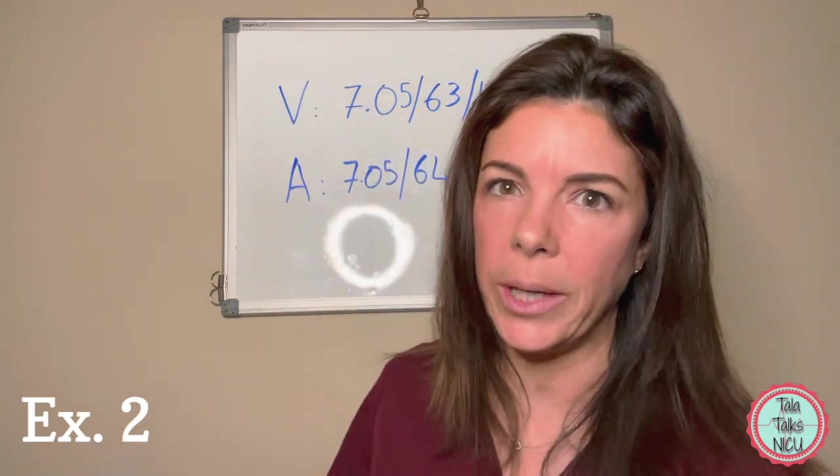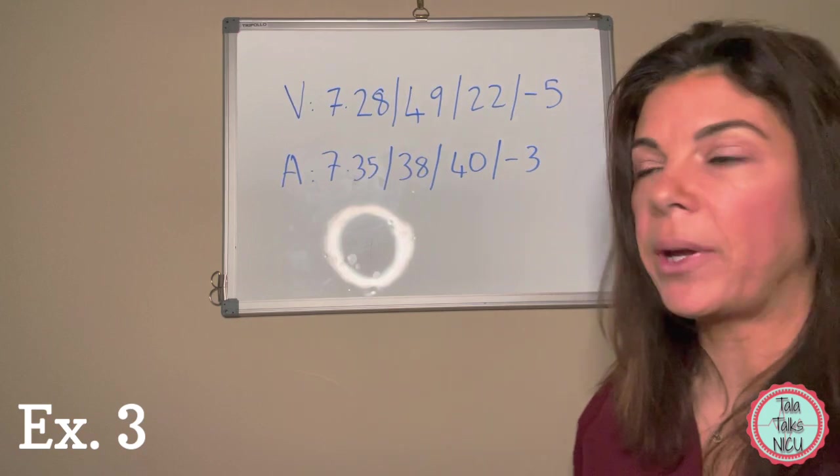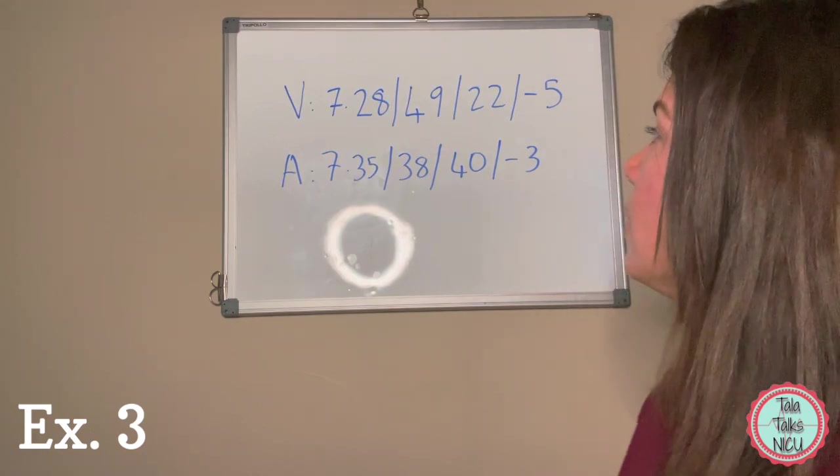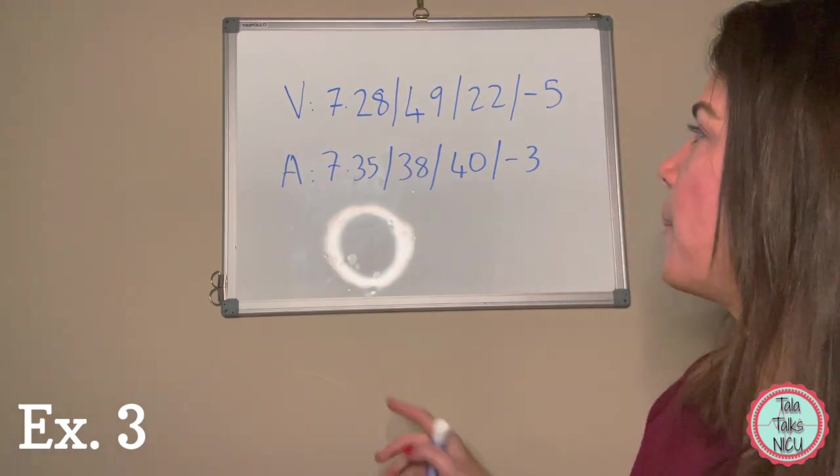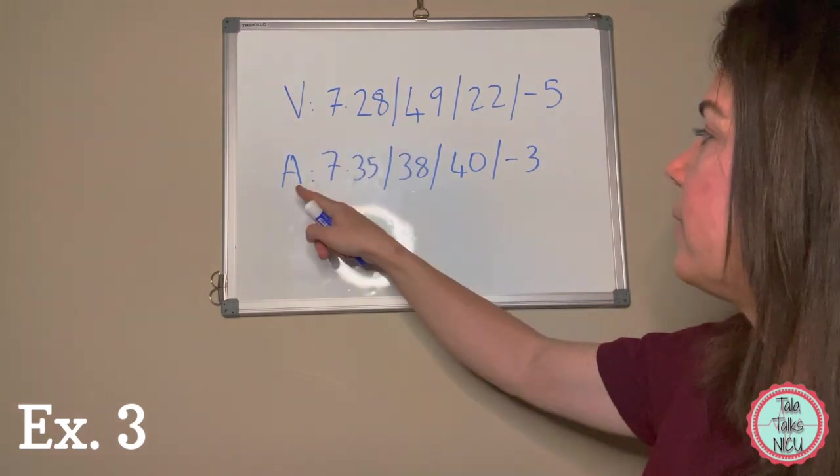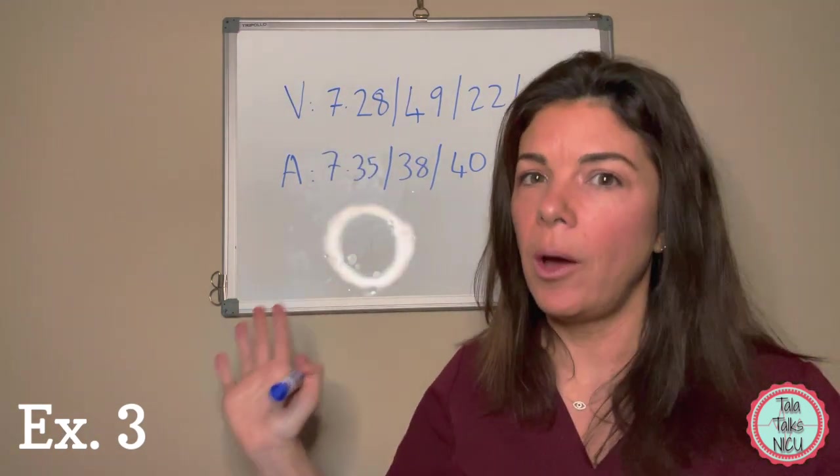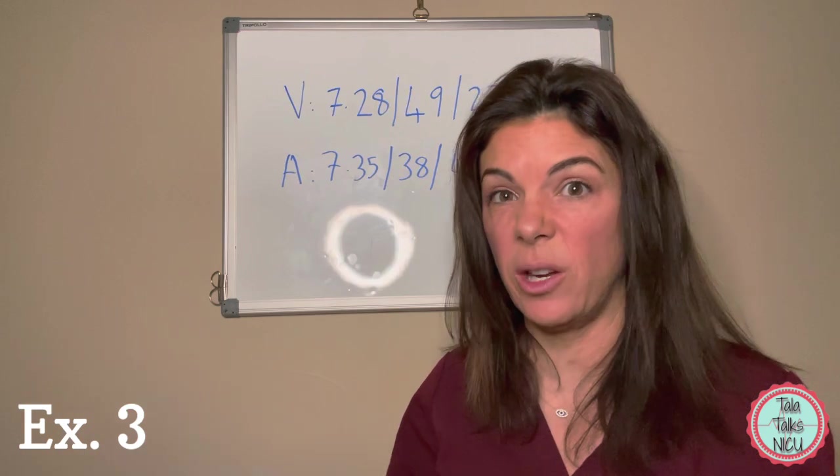For all we know, if we actually got a good arterial blood gas here, the pH may have been less than 7 and the base may have been less than minus 13. Definitely this cord gas should not stop you from cooling.